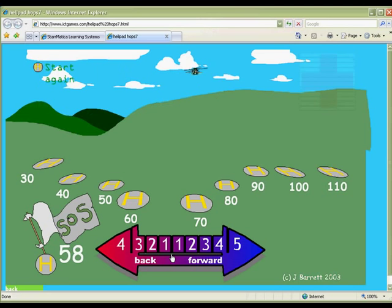Put your students in the pilot seat as they steer this chopper to the correct landing pad. Students enter how far the number they are asked to round is away from the nearest 10. After clicking on the difference, students then select the correct helipad to bring the chopper in for a safe landing. For an interesting discussion, ask your students why you can choose to move forward 5, but can only choose to move backward 4.